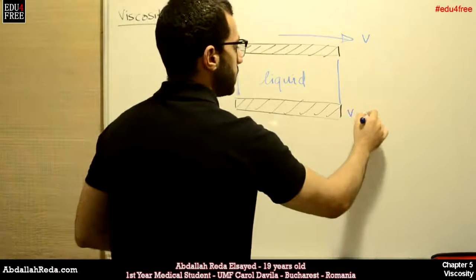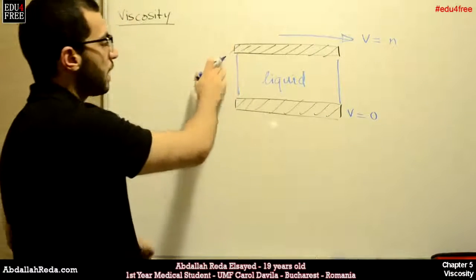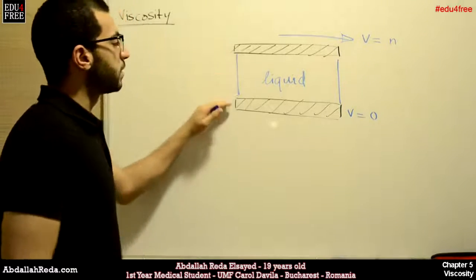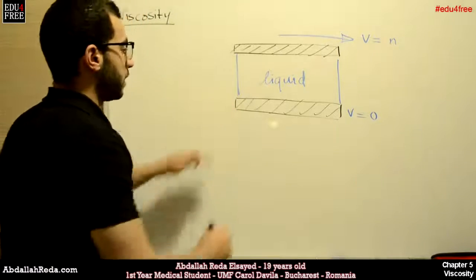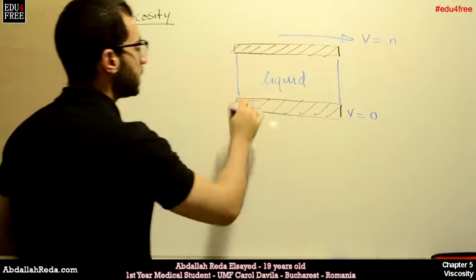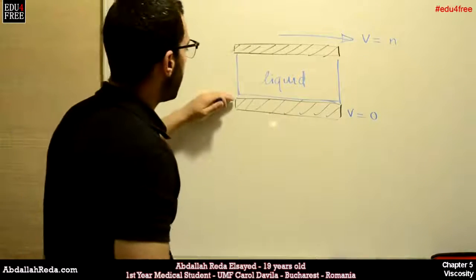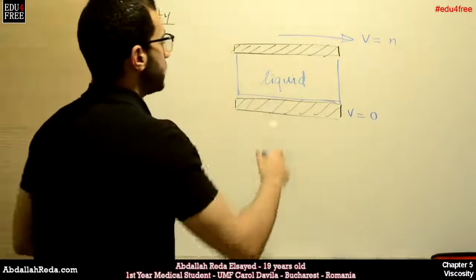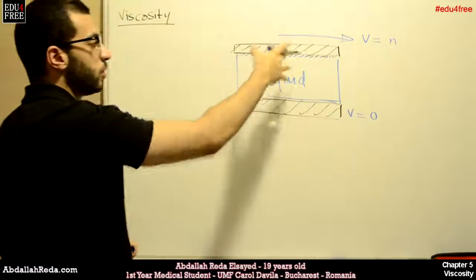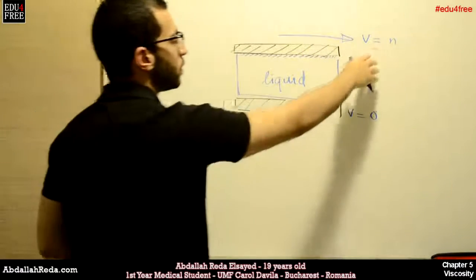So here v equals zero at the static layer, and v equals some value at the moving layer. This liquid contains a huge number of layers. Those very close to the static solid layer are affected by its zero velocity and stay attached to it. On the other hand, molecules very close to the moving layer are also attached to it due to molecular attractions, and they move with a velocity nearly equal to that of the moving layer.